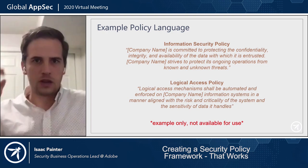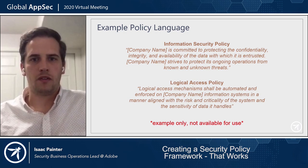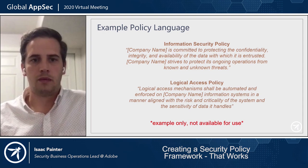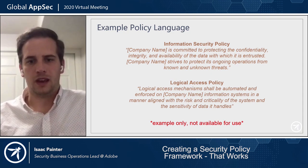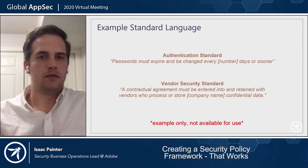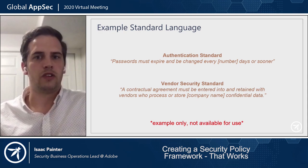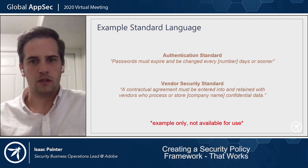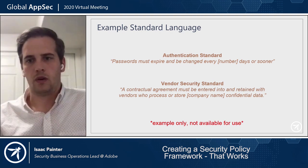Here's an example of policy language: 'Your company is committed to protecting the confidentiality, integrity, and availability of the data with which it is entrusted. Your company strives to protect its ongoing operations from known and unknown threats.' That's your commitment — your strategy, your why. A logical access policy might say something like: 'Logical access mechanisms shall be automated and enforced on your company information systems in a manner aligned with the risk and criticality of the system and the sensitivity of data it handles.' Policies stay high level and don't change much year to year.